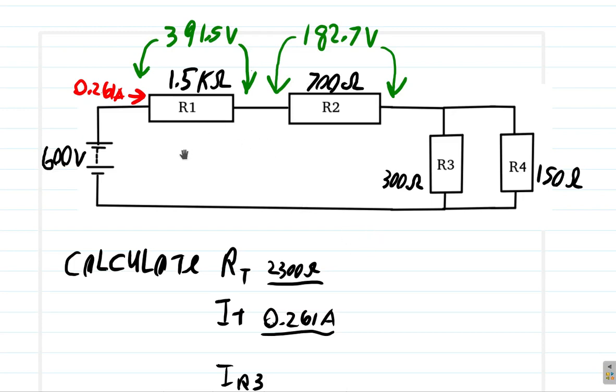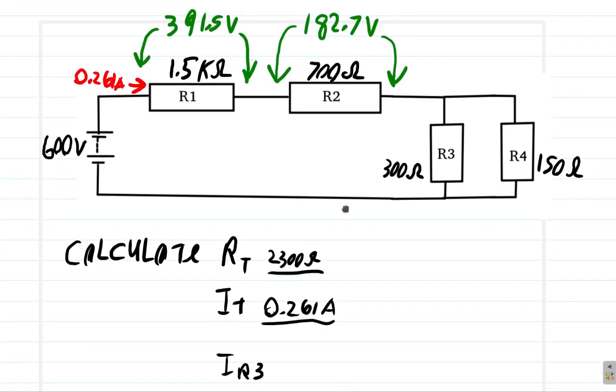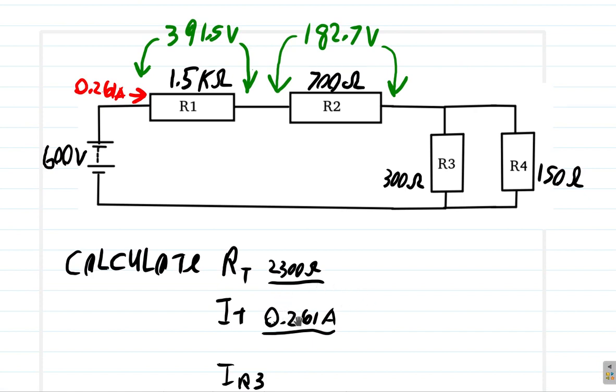Previously we calculated the current and voltage drop across R1 and R2. We started out with the total resistance, the total current, and VR1 and IR1, VR2 and IR2.